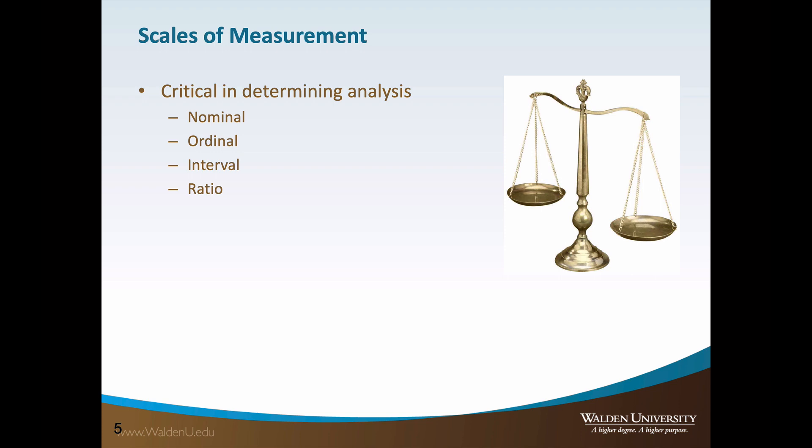Regardless of whether a variable or construct is being measured, each currency has a scale of measurement, which is critical to understanding basic quantitative research. A nominal scale of measurement is a categorical measurement, such as gender, where there are two categories — male and female. Another example is marriage, where the respondent can answer yes or no. The other three scales — ordinal, interval, and ratio — are numerical values but differ in their application. For example, a Likert scale is used to observe ordinal data. Please review the CRQ scales of measurement video tutorial for a more in-depth examination.